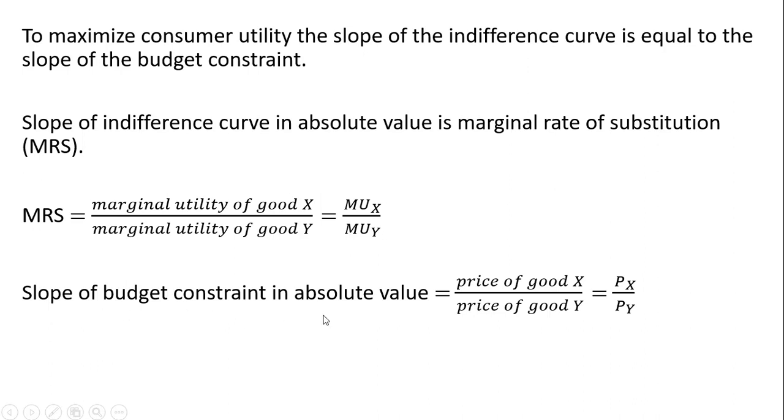The slope of the budget constraint in absolute value is given by the price ratio, the price of good X divided by the price of good Y.